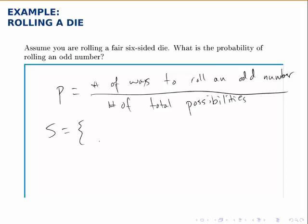So our sample space, or our list of total possibilities, is the numbers 1, 2, 3, 4, 5, and 6, because those are the outcomes that we can have when we roll a die.